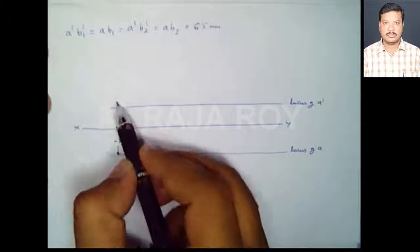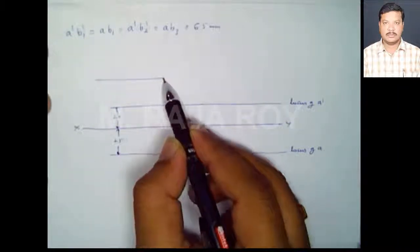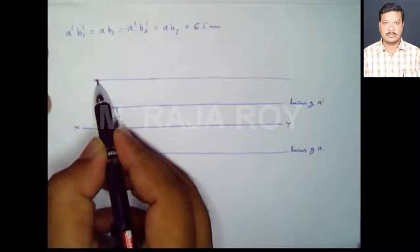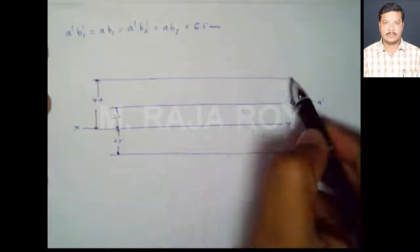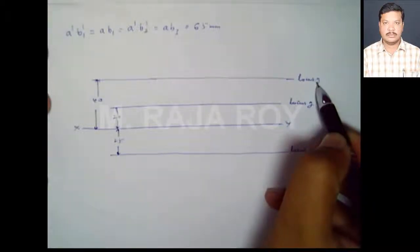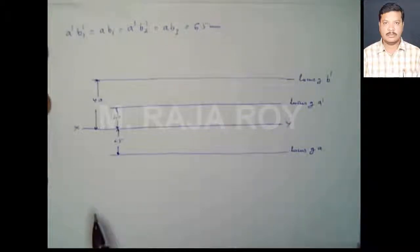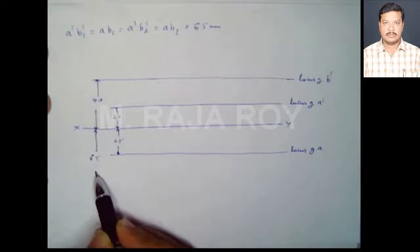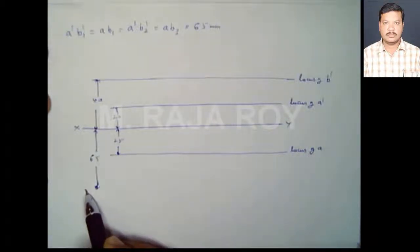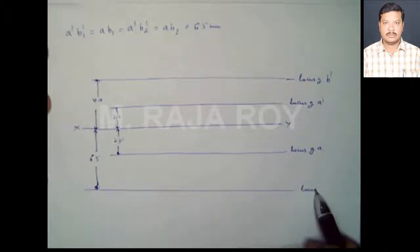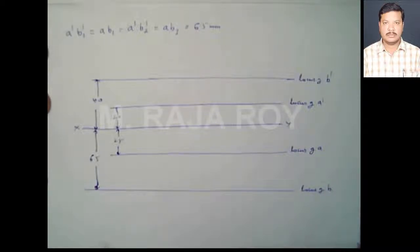End B is 40mm above HP, so at a distance of 40mm I will draw one more locus line — this is the locus of b'. Point B is 65mm in front of VP, which means after rotation the top view will come 65mm below the XY line. So below XY at a distance of 65mm I will draw the locus of b.